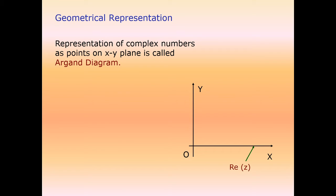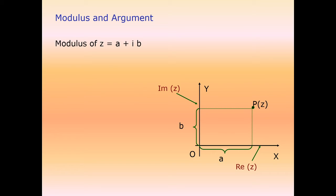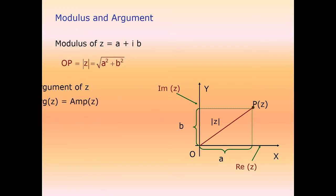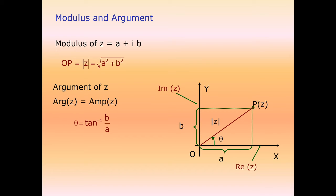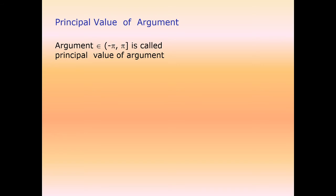In the Argand plane, the x-axis is the real axis and the y-axis is the imaginary axis. A complex number a + iota·b is represented as the coordinate (a, b). The modulus of z is the distance from the origin: |z| = √(a² + b²). The argument (or amplitude) of z is the angle θ made with the positive x-axis, where tan θ = b/a, i.e., θ = tan⁻¹(b/a). The principal argument belongs to the interval (-π, π].